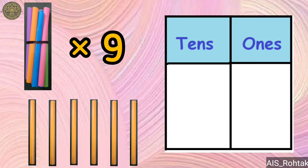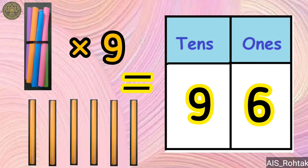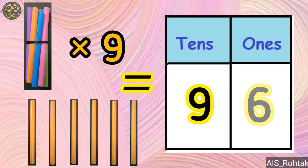Nine bundles and six loose sticks make the number 96 — nine under the tens column and six under the ones column.